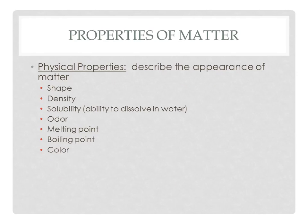Scientists use different types of properties to identify matter. There are two types: physical and chemical. Physical properties describe just the appearance of matter — things you can observe with your five senses — such as shape, density, solubility (the ability to dissolve in water), odor, melting point, boiling point, and color.